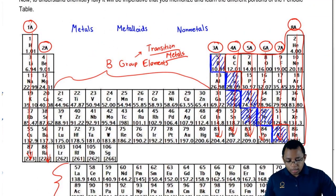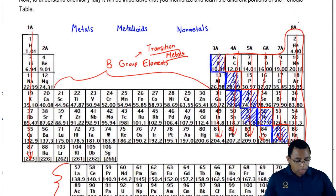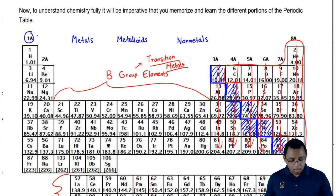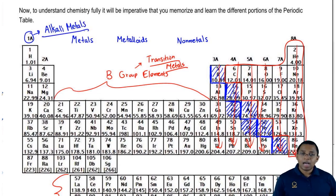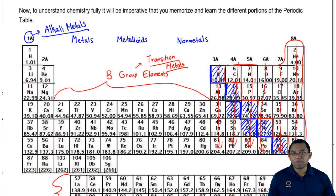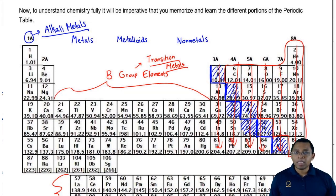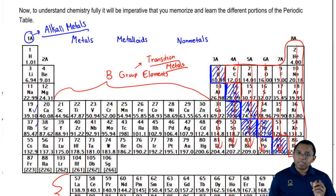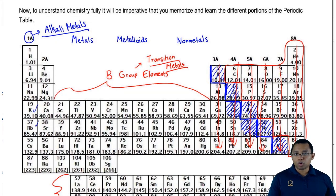Many of these representative groups also have special names associated with them. Group 1a elements are called your alkali metals. Hydrogen would be an exception — hydrogen is not a metal, so it's not an alkali metal; it's a non-metal. The alkali metals are highly reactive. For example, if you had a piece of pure sodium and dunked it into water, it would have a violent explosion. As you go down the group to K or Rb and throw them into water, the reactions are even more violent, leading to bigger explosions. That's why it's very hard to get a sample of these pure group 1a elements.